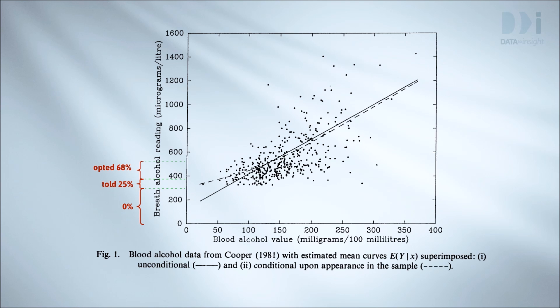68% of those between 375 and 525 had a blood test. 27% of those over 525 had a blood test as well. The graph shows breath alcohol versus blood alcohol for everyone who had a blood test.